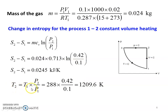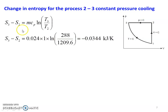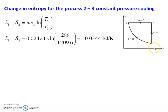Final temperature T2: for constant volume process, T2/T1 equals P2/P1, so T2 equals T1 into P2/P1 equals 288 into 0.42/0.1 equals 1209.6 Kelvin. Change in entropy for process 2 to 3, constant pressure cooling: S3 minus S2 equals M·Cp·ln(T3/T2). Since T3 equals T1 equals 288 K, substituting 288/1209.6 gives minus 0.0344 kilojoules per Kelvin. This is negative because it is a cooling process.